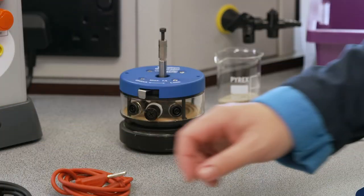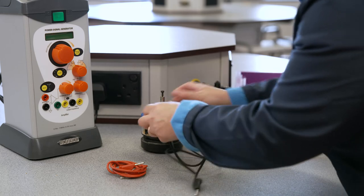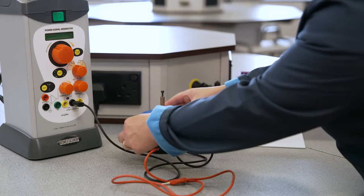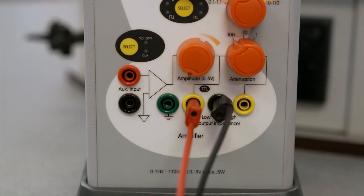To set up the experiment, connect the vibration generator to the power signal generator using standard four millimeter leads from the vibration generator to the low impedance sockets on the power signal generator.